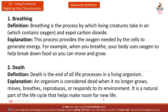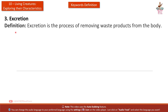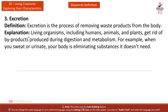Third: Excretion. Definition: Excretion is the process of removing waste products from the body. Explanation: Living organisms, including humans, animals, and plants, get rid of byproducts produced during digestion and metabolism.